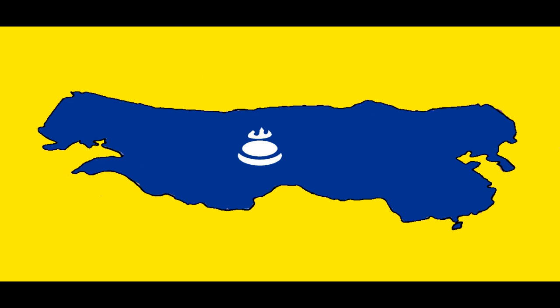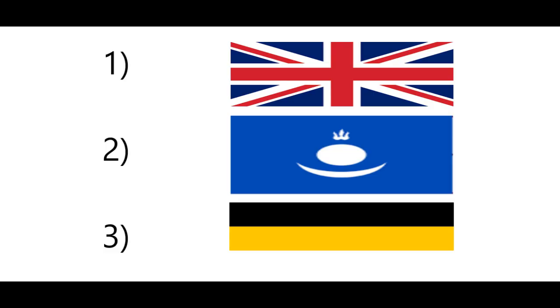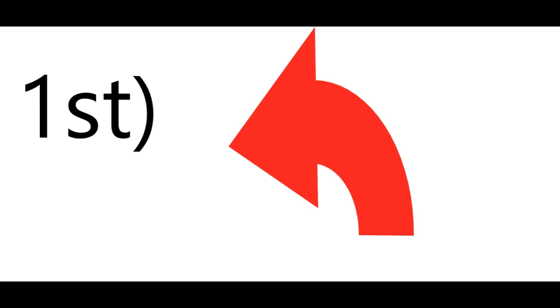This right here is the Mongol Empire. This empire was the largest contiguous empire in history and only second in total area behind the British Empire. It began with the unification of the various tribes of the Mongolian steppe and ended with the separation of the empire by brothers and descendants of a great conqueror. Now let's take a look at this empire.